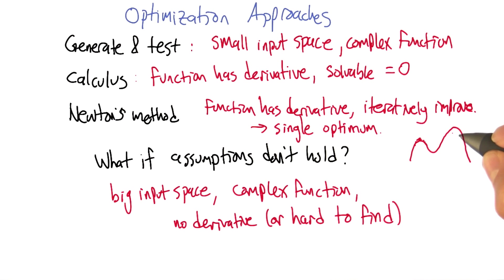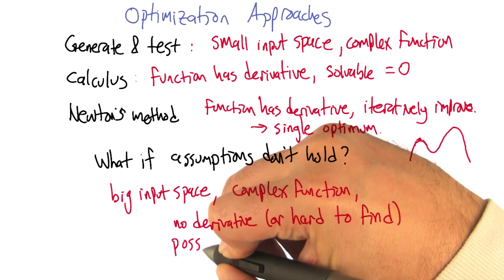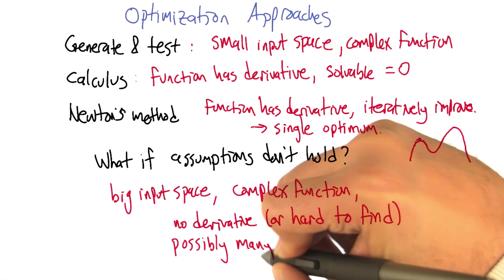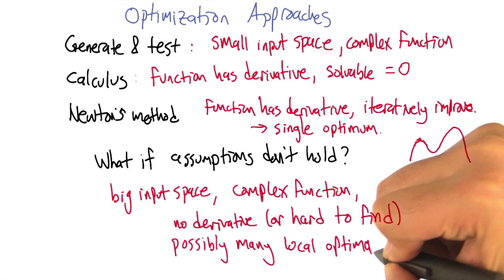So that would be bad if you have lots of local maxima in this case, or optima. Right. So we can kind of list this as well: possibly many local optima, right?